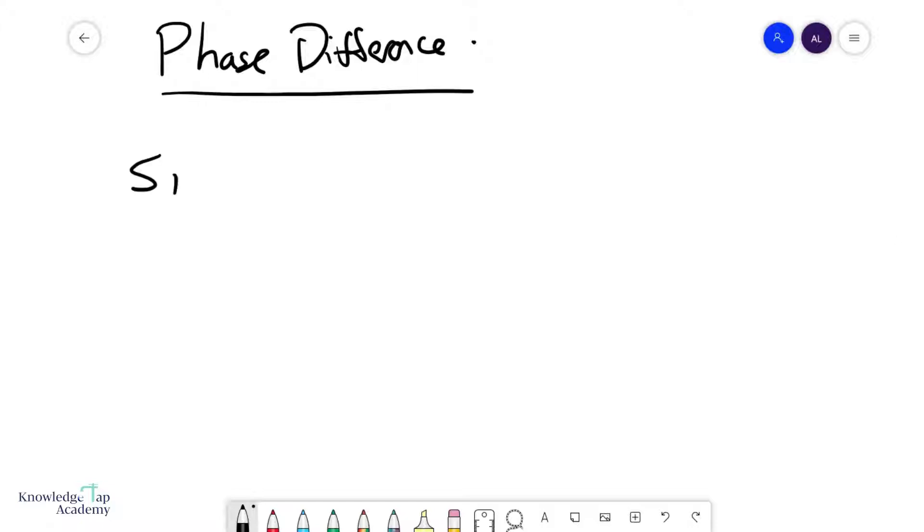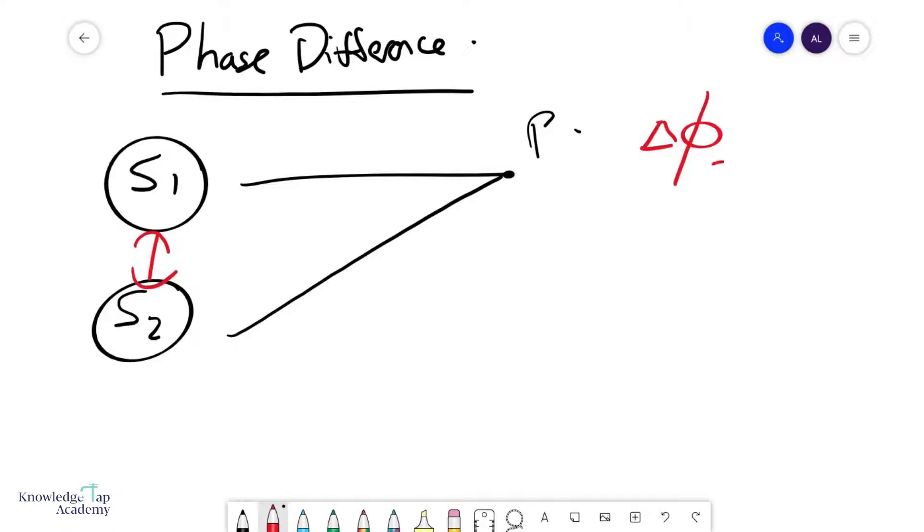Now first of all, if I have two sources, S1 and S2, and they are going to meet at a point in space P, I first have to consider whether there's any inherent phase difference between the sources. And we're going to call this the phase difference of the source.